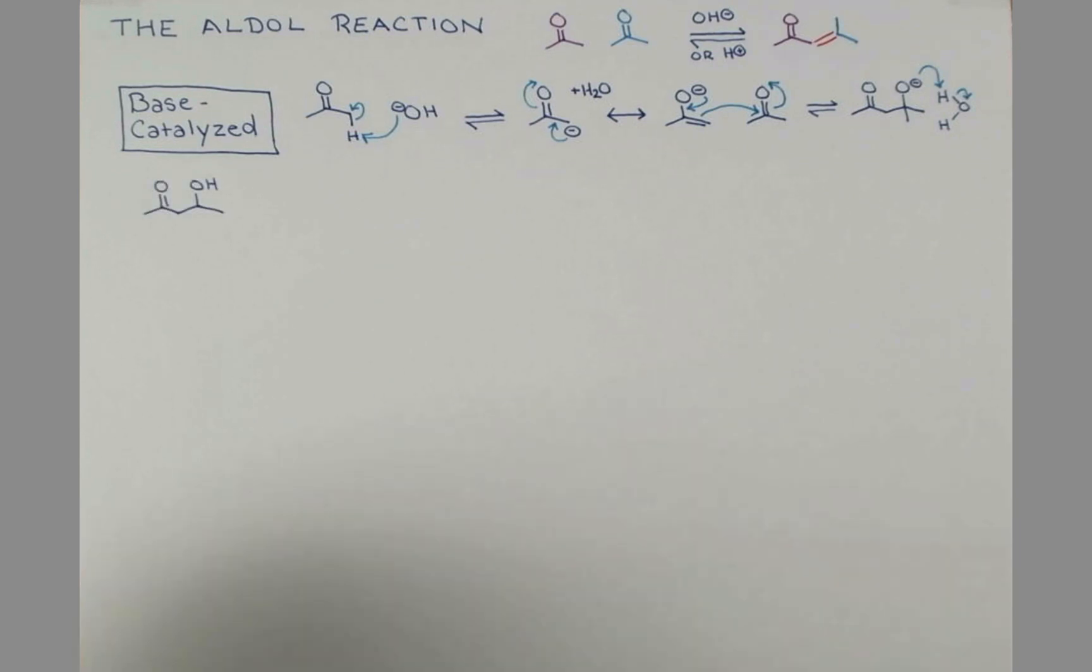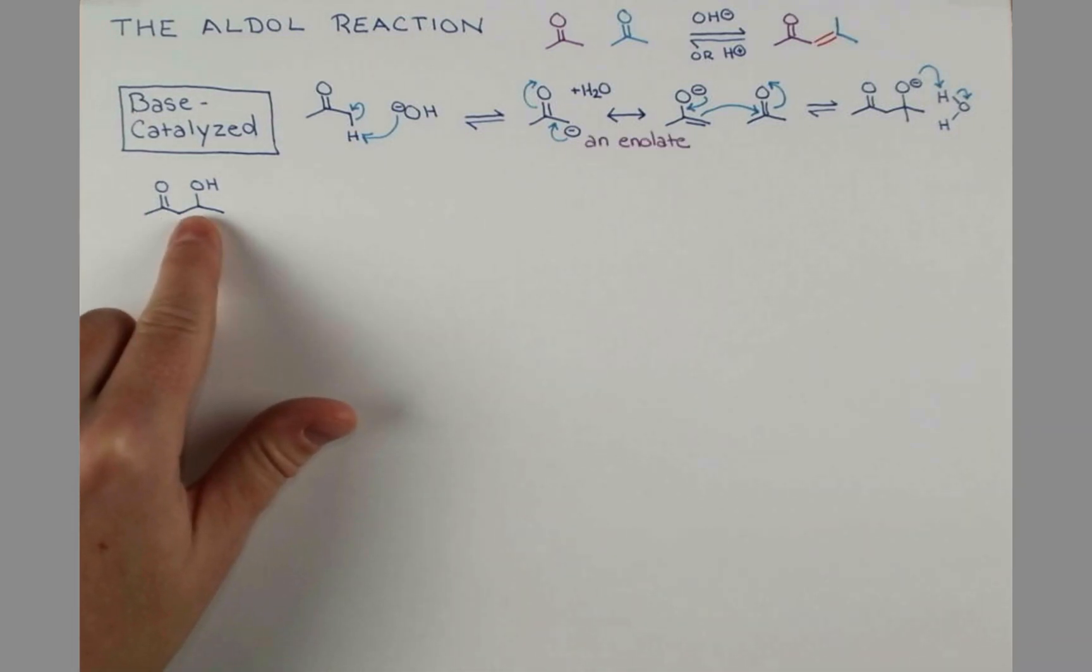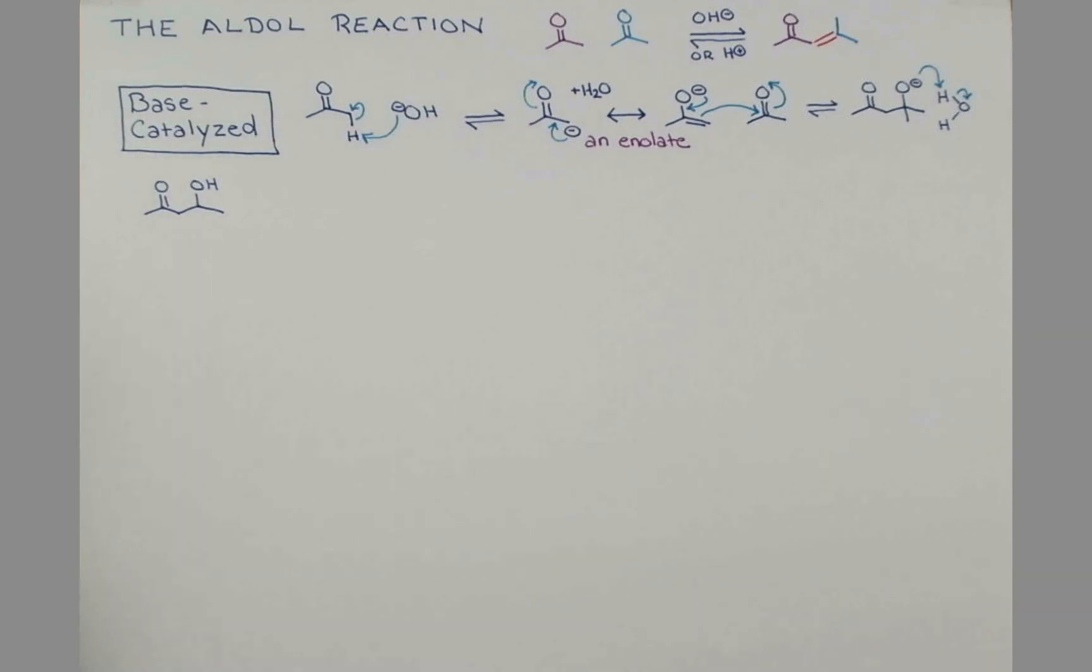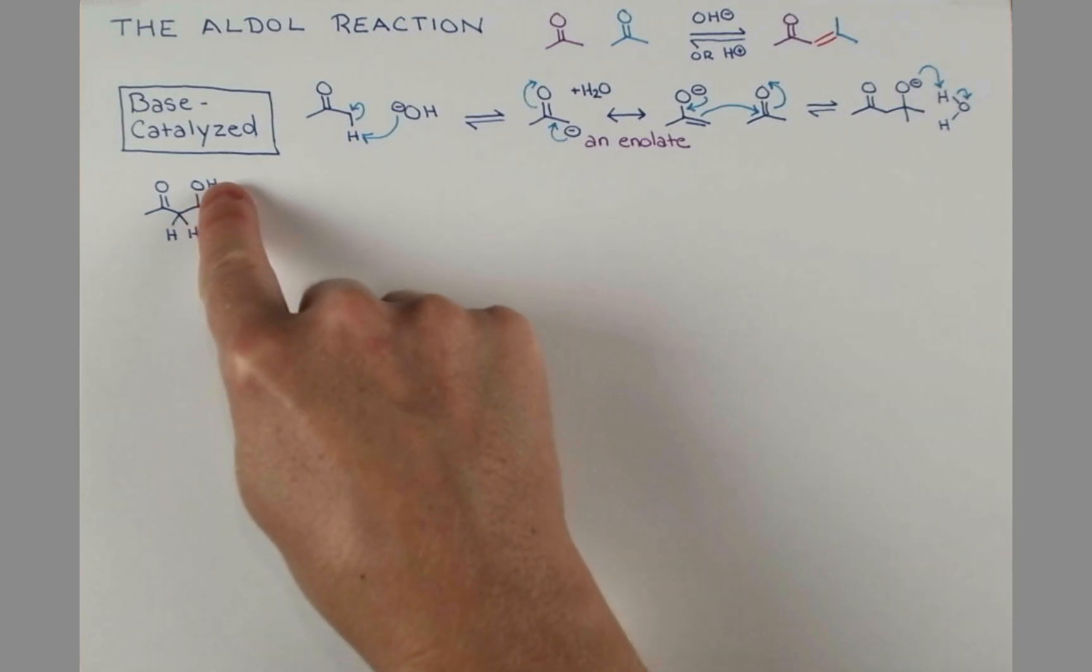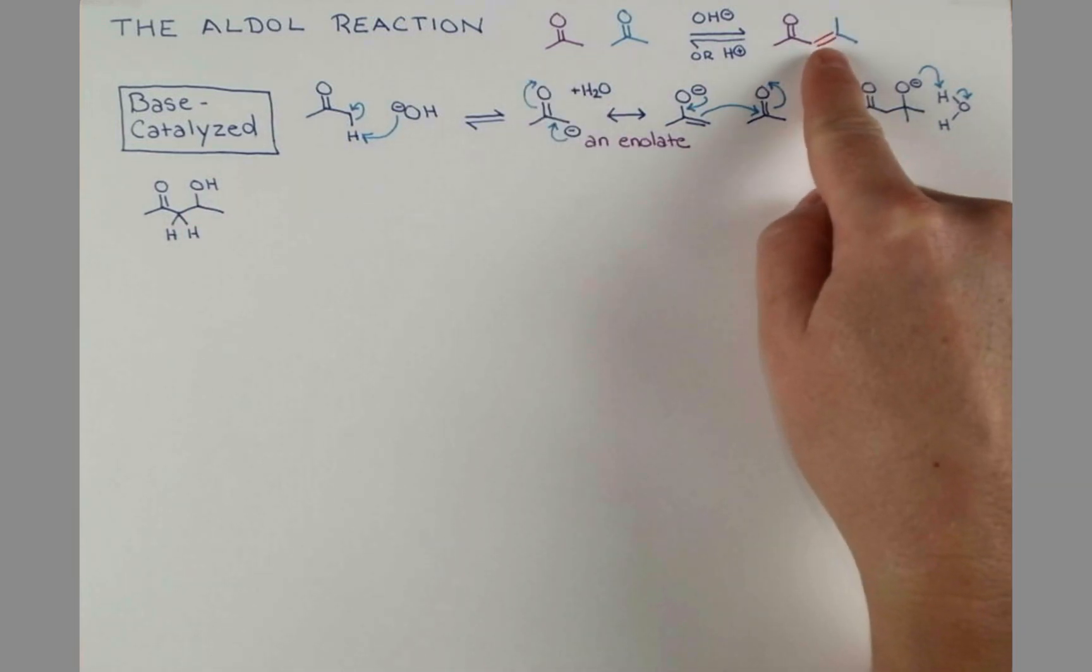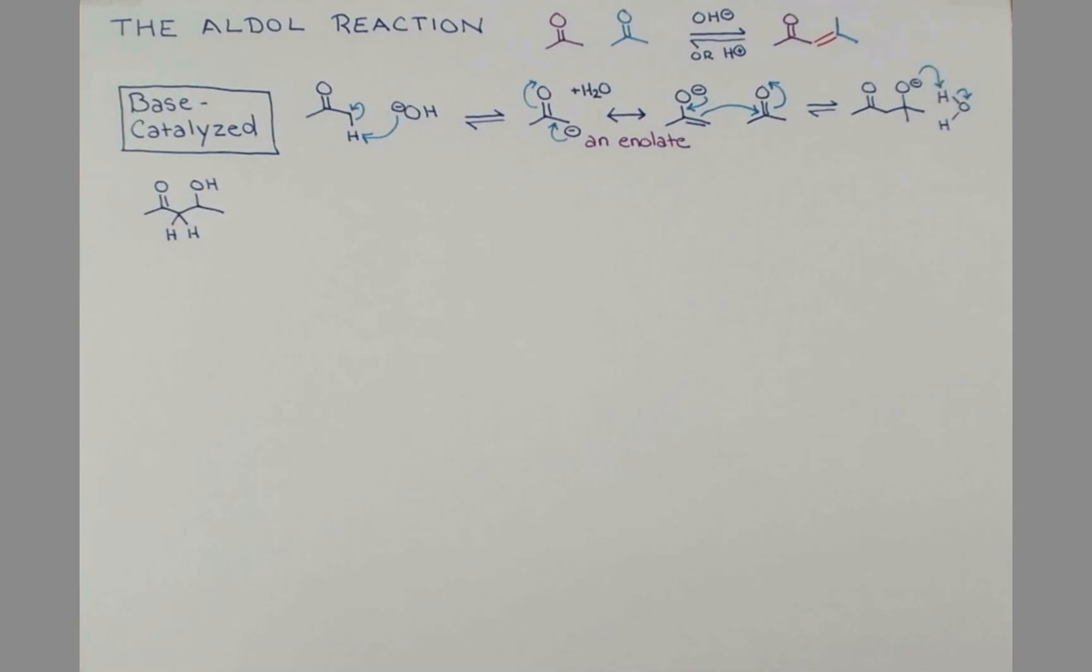And we'll form this beta-hydroxy carbonyl compound. And I just want to go back for a second and just label our enolate here. So we have another carbonyl in this compound. We also have this OH group that's inductively pulling electrons. So the hydrogen atoms that are on this carbon are even a bit more acidic than our starting material.